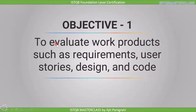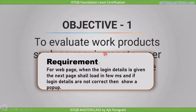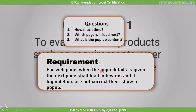The first objective is to evaluate work products such as requirements, user stories, design, and code. The output of the requirement stage is a requirement document where all requirements are mentioned. Suppose this is the customer requirement: for a web page, when login details are given, the next page shall load in a few milliseconds, and if login details are not correct, then show a popup. But if you look at this requirement carefully, you will find it is not complete — there are some open points. For example, how much time? They mentioned 'few milliseconds' but the timing should be specific.